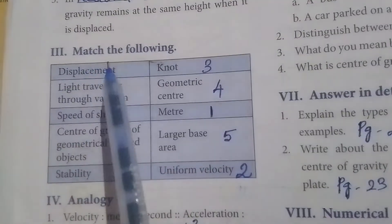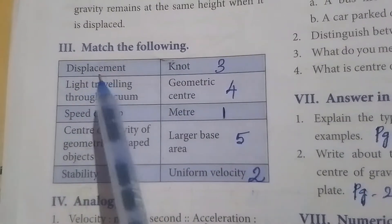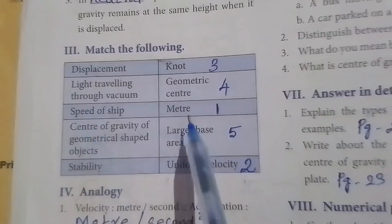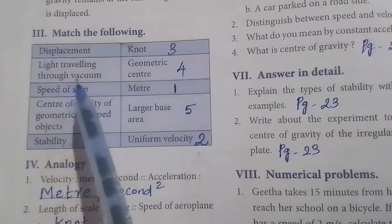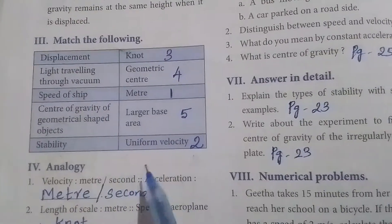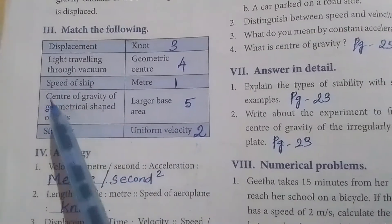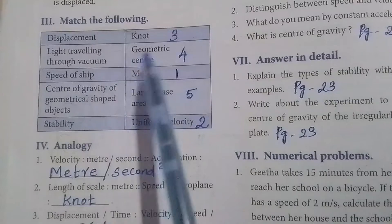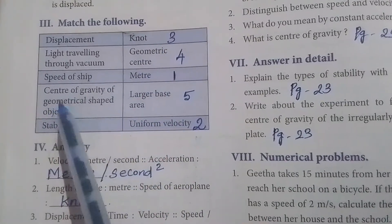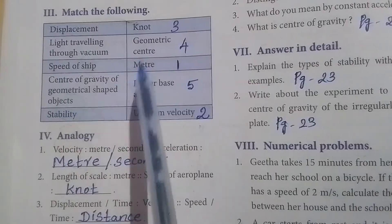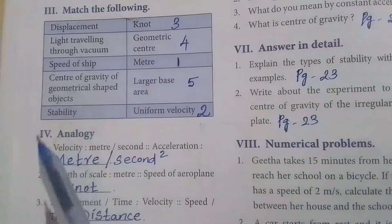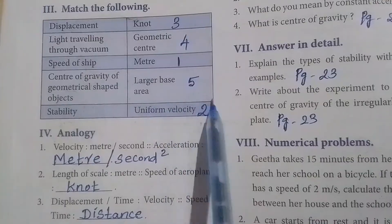Third Roman letter: Match the following. Displacement - answer, meter. Light traveling through vacuum - answer, uniform velocity. Speed of ship - note. Center of gravity of geometrical shaped object - geometric center. Stability - larger base area.